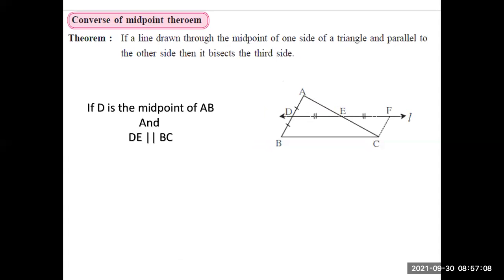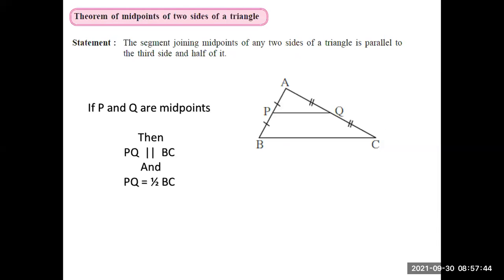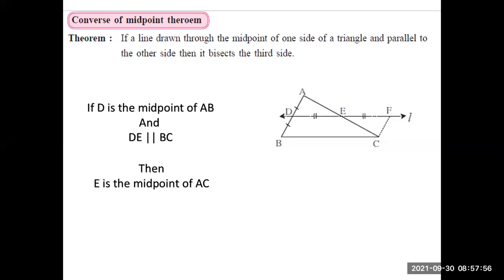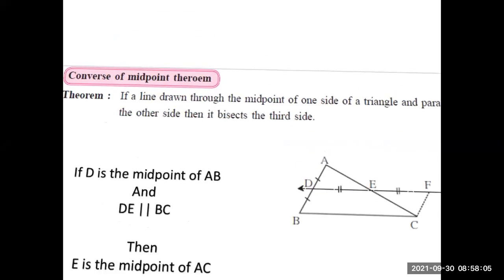The converse states that if one side has a midpoint and a line segment extending from that midpoint is parallel to the base, then the other side also has a midpoint. We use the converse of the midpoint theorem anywhere we are asked to prove that a point is a midpoint. And anywhere we are asked to prove two lines are parallel when midpoints are given, we use the midpoint theorem. For example, if D is the midpoint and DF is parallel to BC, therefore we can say E is the midpoint.